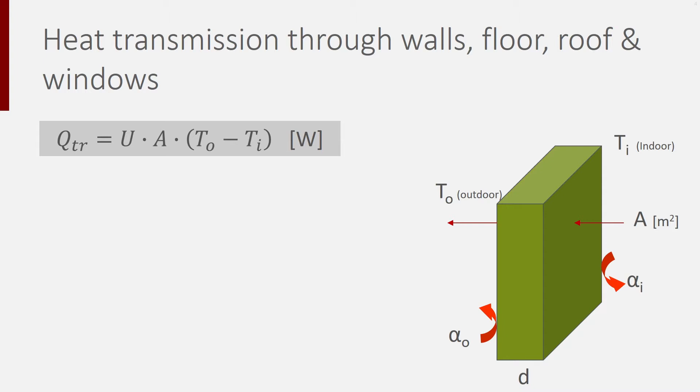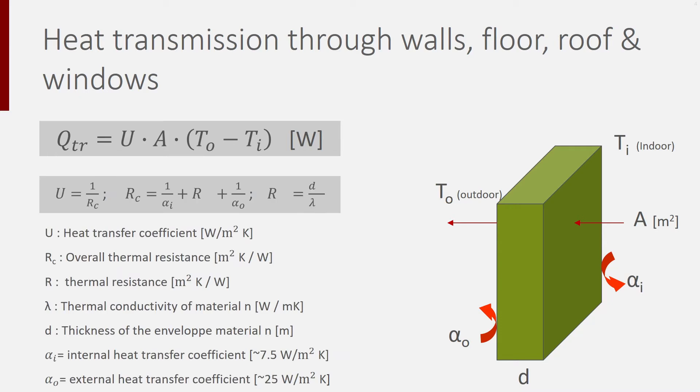This heat transfer coefficient is a property of the envelope, that is, a property of the materials used and their thickness. For windows, the U value is generally given by the producer while for walls, floors or roofs, it has to be calculated based on the heat resistance RC. The heat resistance RC is the inverse of the heat transfer coefficient U.